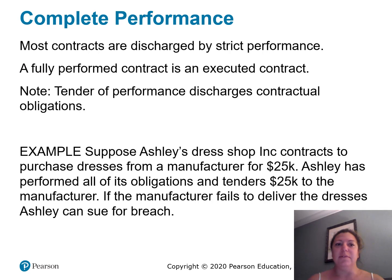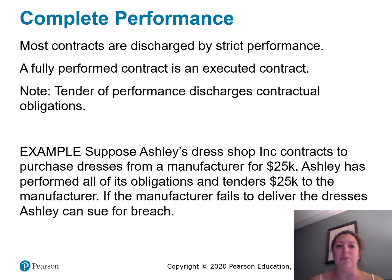Complete performance: most contracts are discharged by strict performance. A fully performed contract is an executed contract. Tender of performance discharges contractual obligations. For example, suppose Ashley's Dress Shop Inc. contracts to purchase dresses from a manufacturer for $25,000. Ashley has performed all of its obligations and tenders $25,000 to the manufacturer. If the manufacturer fails to deliver the dresses, Ashley can sue for breach — there is no complete performance.